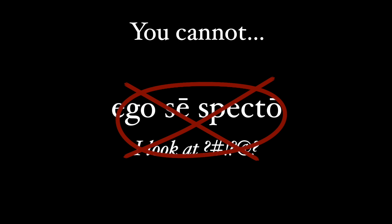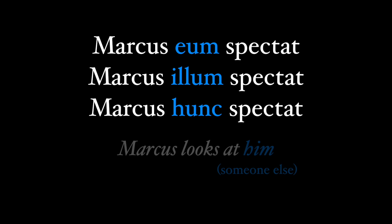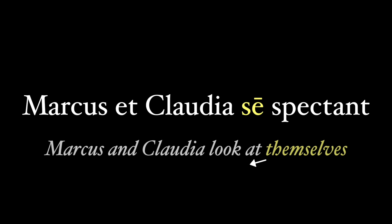You can't use sui, sibi, se/sese with a first or second person subject, so no 'ego se specto.' But you could say 'Marcus se spectat' — Marcus looks at himself. If we wanted Marcus to look at some other guy, we could use forms like 'Marcus eum spectat.' This can also be feminine, so 'Claudia se spectat' works for 'Claudia looks at herself.' And sui, sibi, se/sese can also be plural.